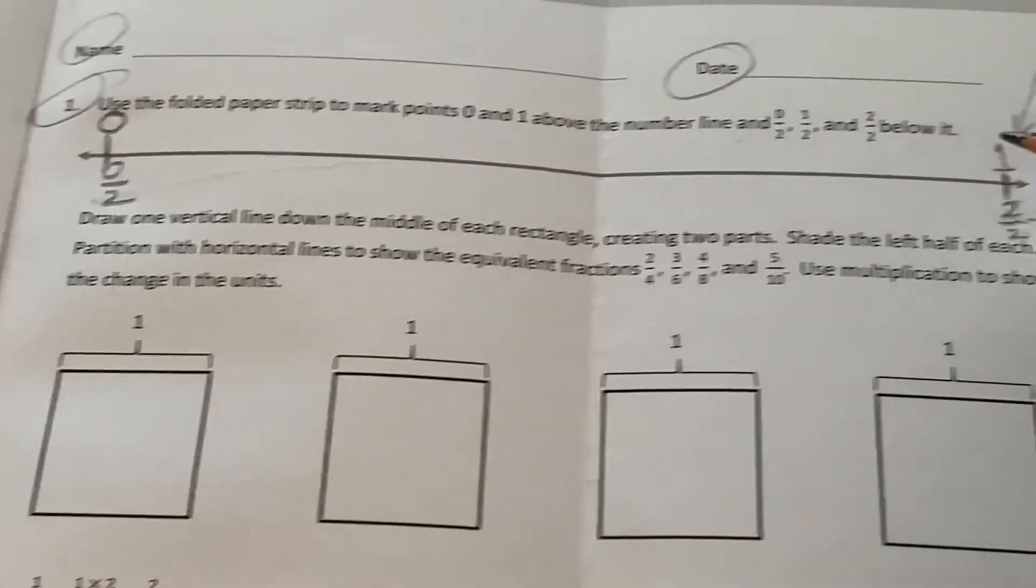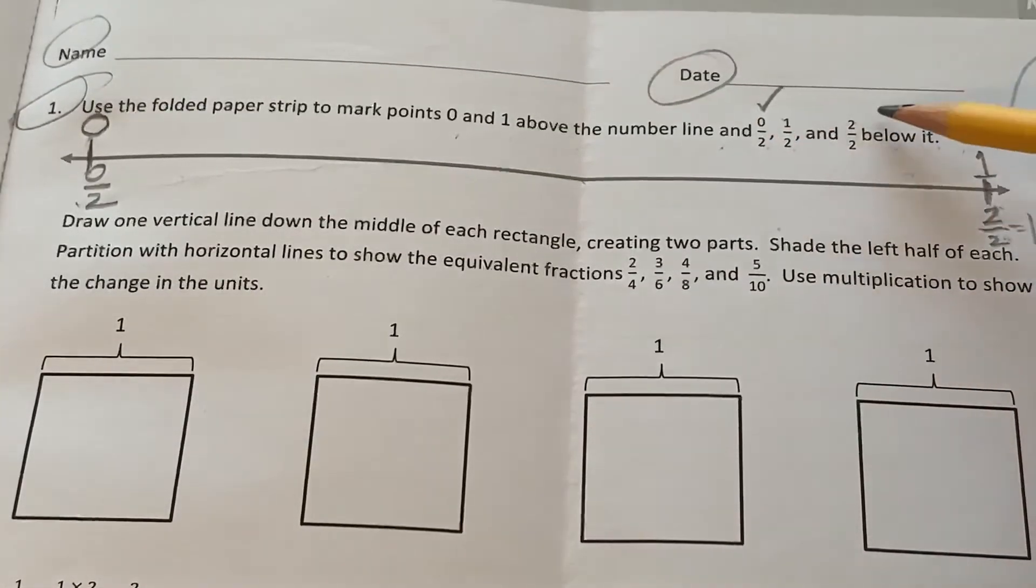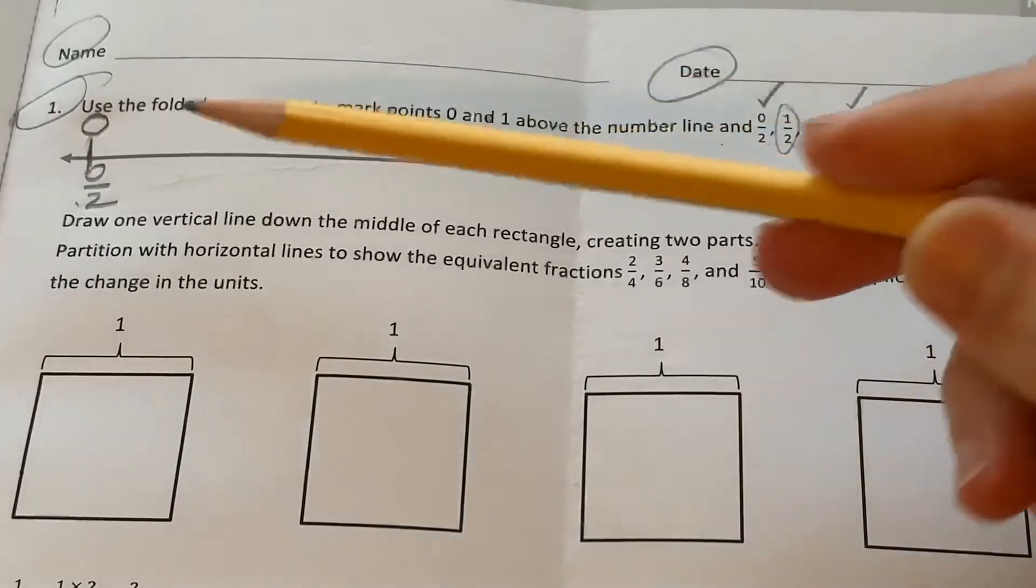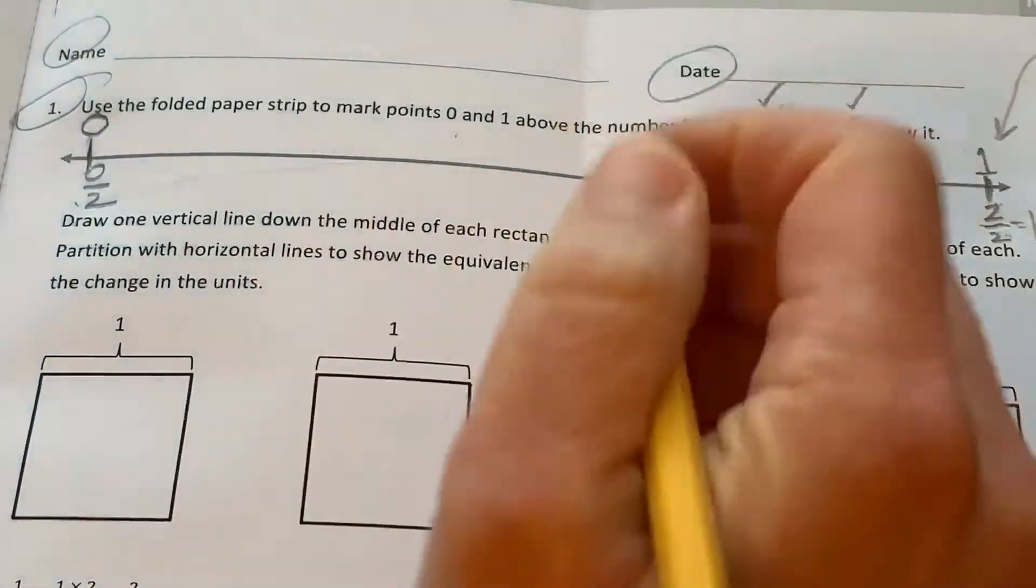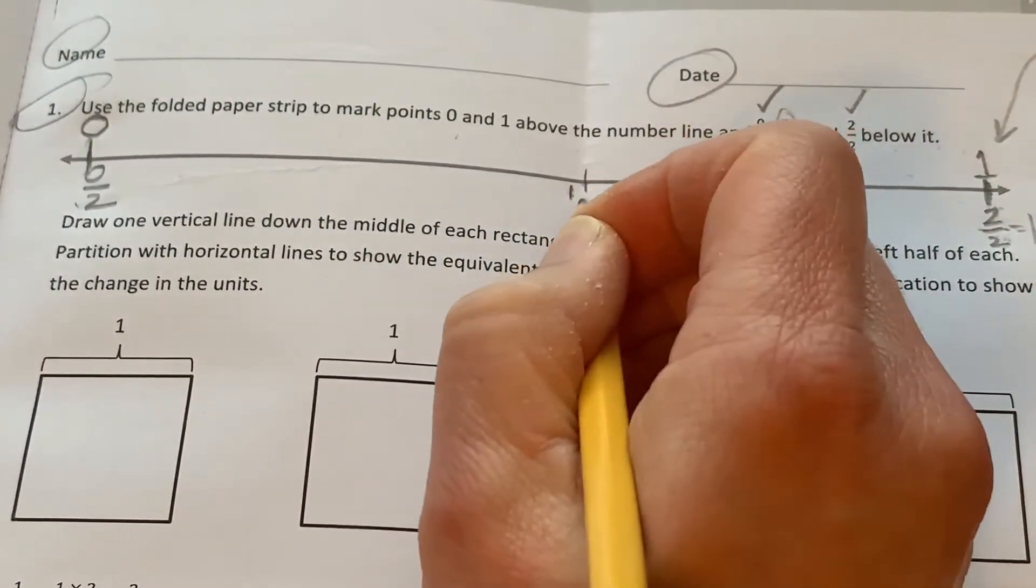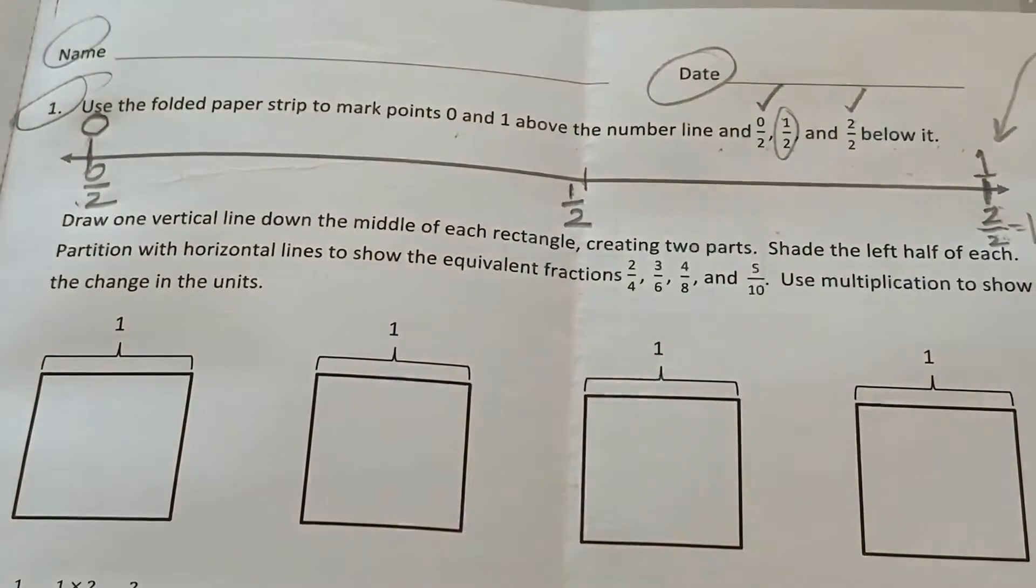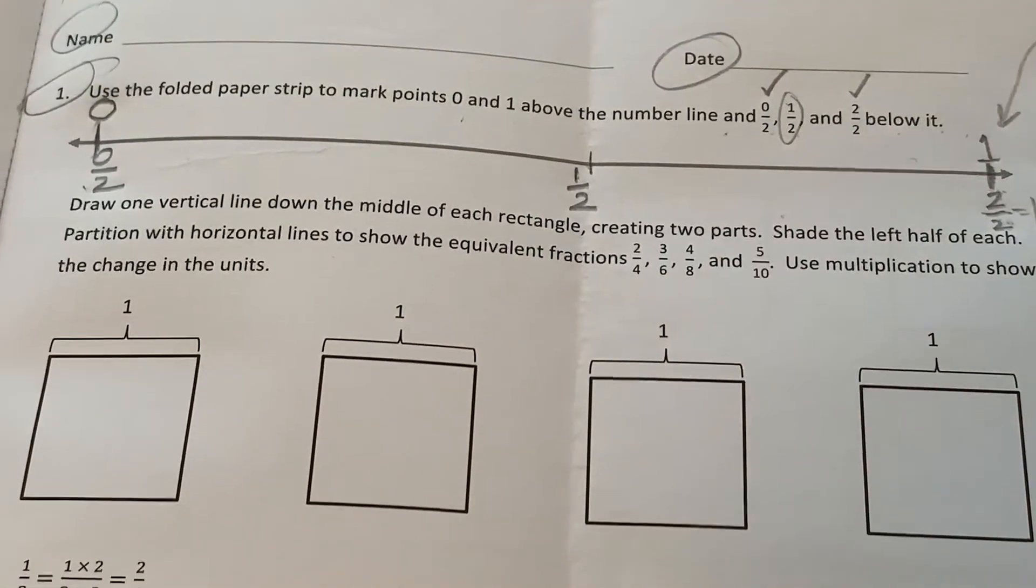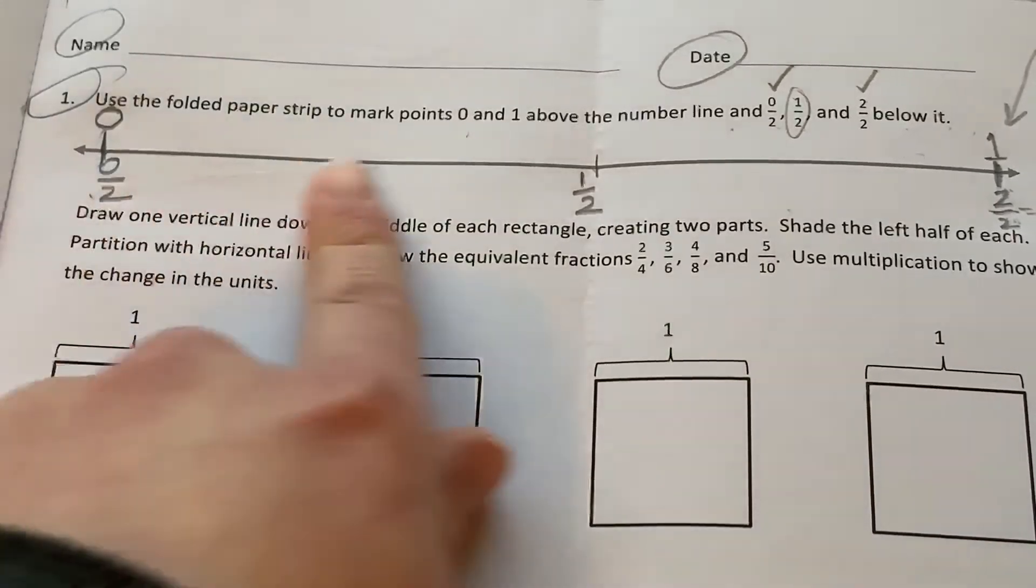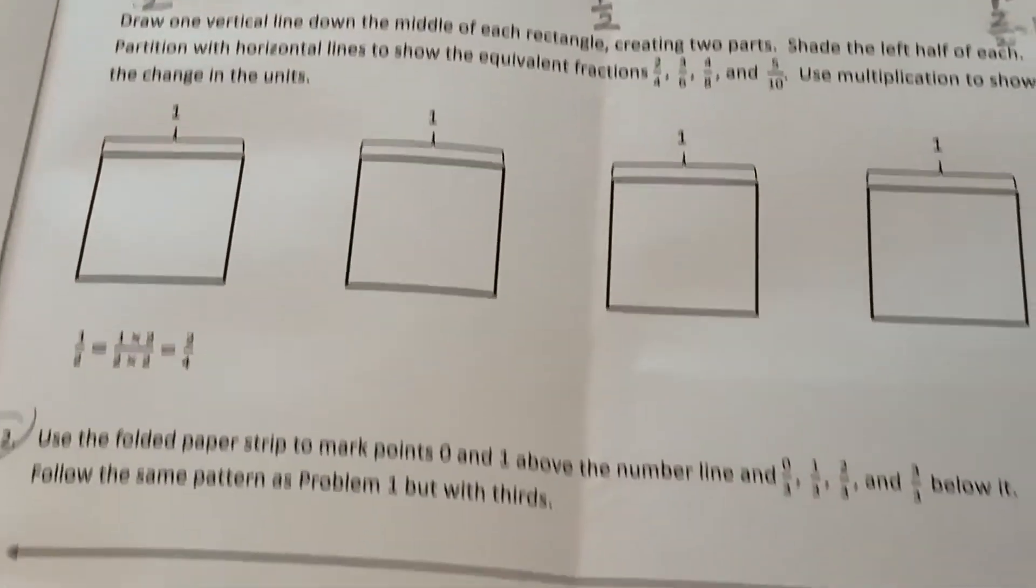So where would the half? We use this one, we use this one, so now we have the half. The half is going to go exactly halfway between 0 and 1, kind of where we folded it. So I'm going to put a line and label it 1 half. Okay, so before we even finish this problem, I want you to do what we just did on problem number 2.